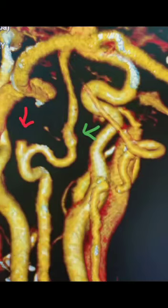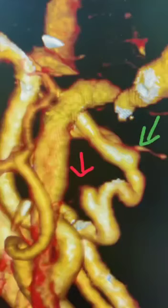The 3D reconstruction of the CT angiography clearly shows the proximal stump marked by the red arrow and the distal stump marked by the green arrow. This is an alternate view which confirms the same.